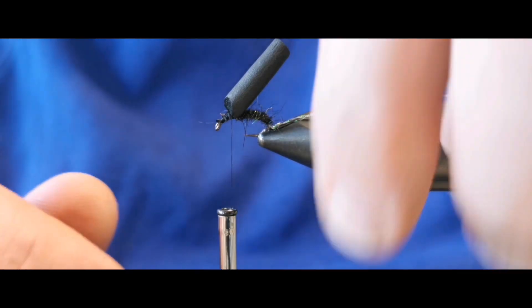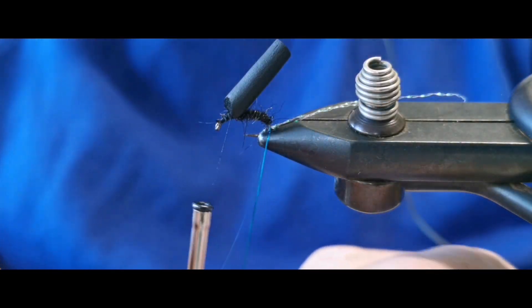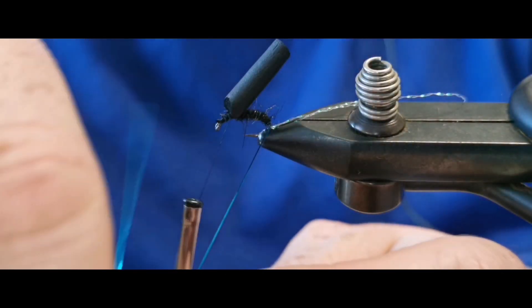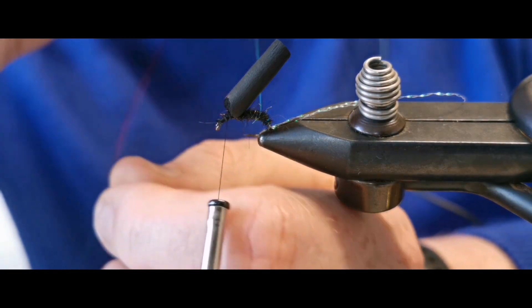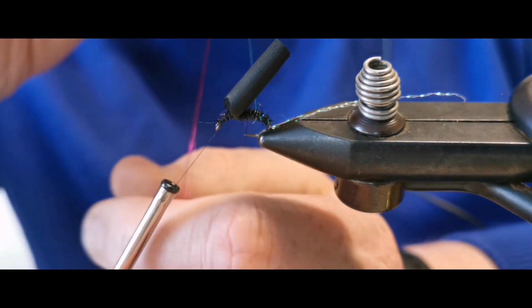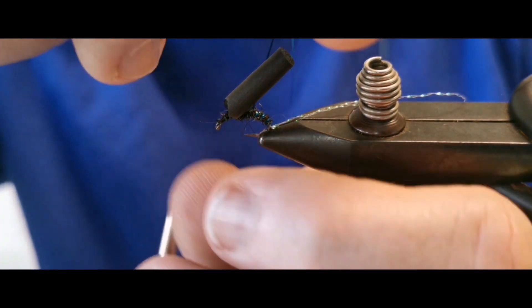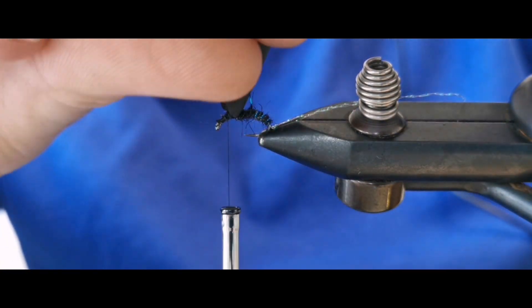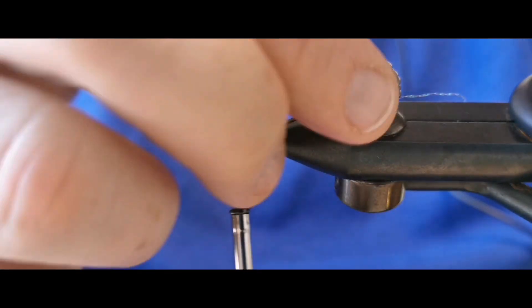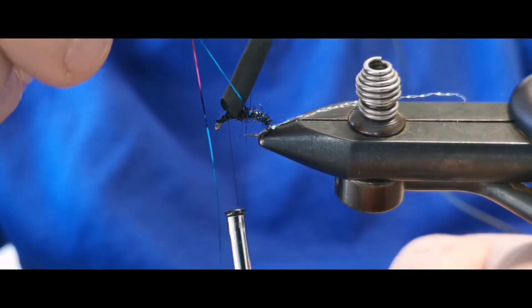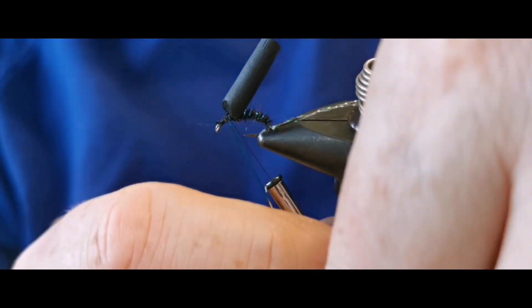Now our tinsel, and when we get the tinsel you want a full turn at the tail and then start bringing that blue core up through our peacock dubbing. One or four, maybe five turns coming up, as many as you can get on. There's no hard and fast rule.